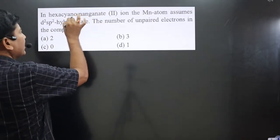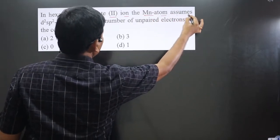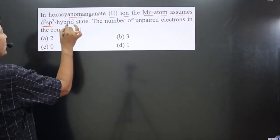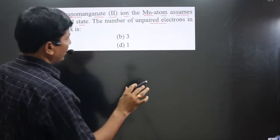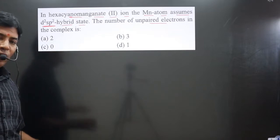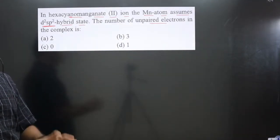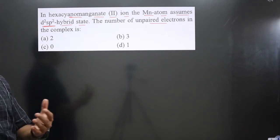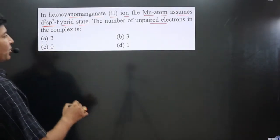The question says in hexacyanomagnetate(II) ion, the manganese atom assumes d²sp³ hybrid state. The number of unpaired electrons in the complex we have to calculate. Whenever the question is related to hybridization, geometry, or magnetic properties—determining unpaired electrons—we use valence bond theory.